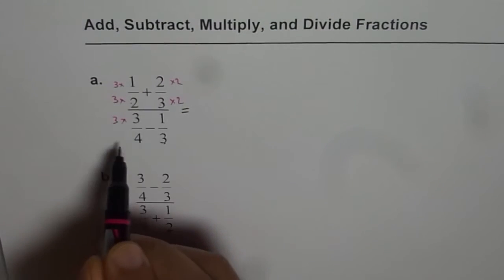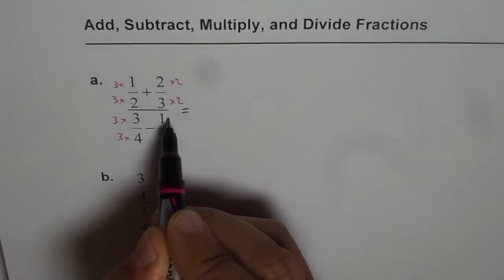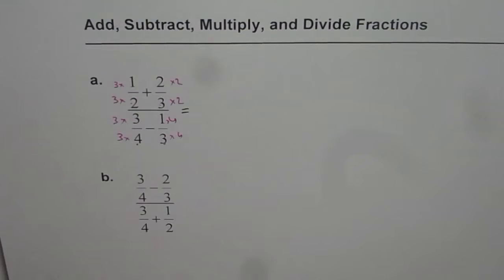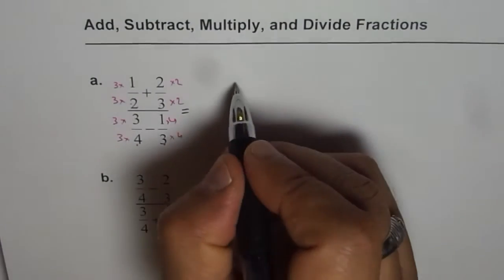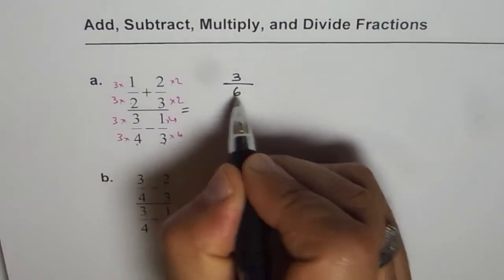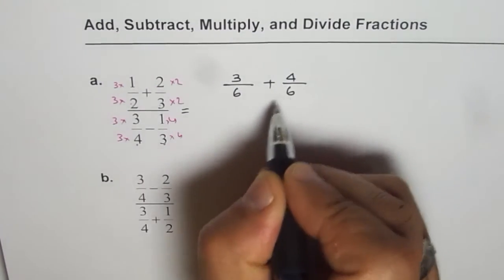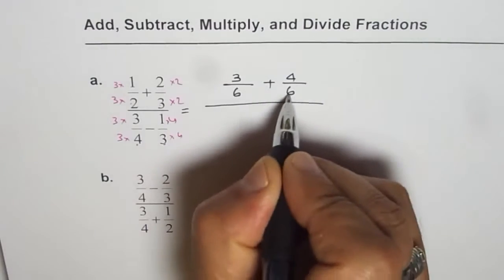As far as the denominator is concerned, we should be multiplying the first one by 3 and the other one by 4. So we get 3 over 6 plus 4 over 6. You see we get a common denominator of 6.